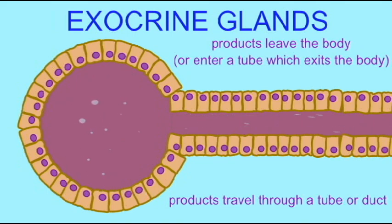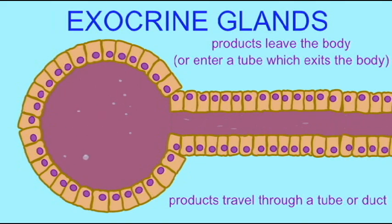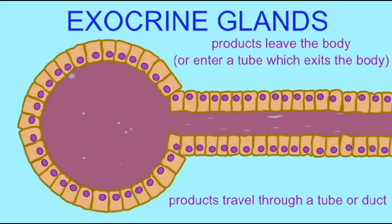Exocrine secretions typically travel through tubes or ducts. If there is a sweat gland, there would be a sweat duct; if there is a digestive gland such as a salivary gland, there would be a duct for that gland. The only exocrine glands which lack these ducts are the unicellular glands, some of which make mucus. Exocrine glands are very common in the skin, in the digestive tract, in the reproductive tract, and in other parts of the body.